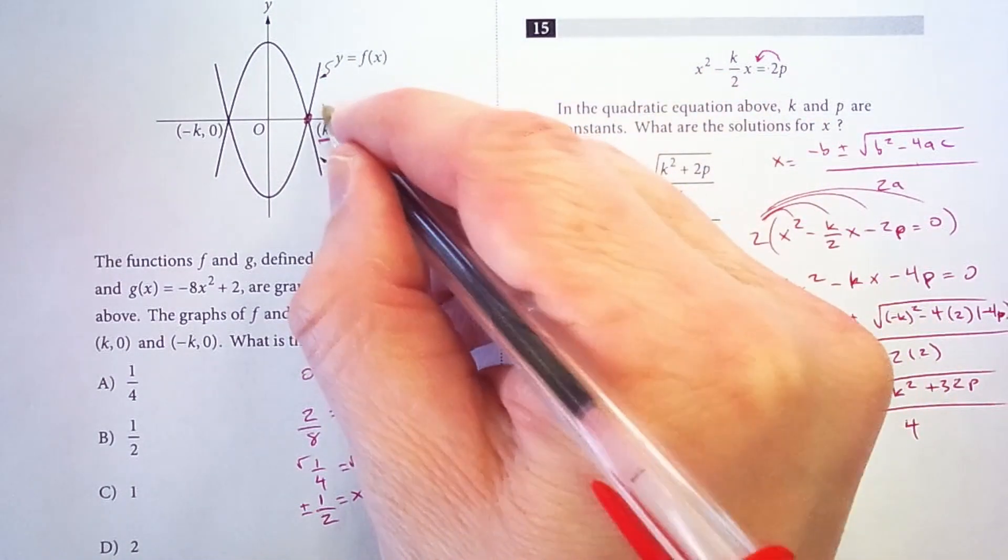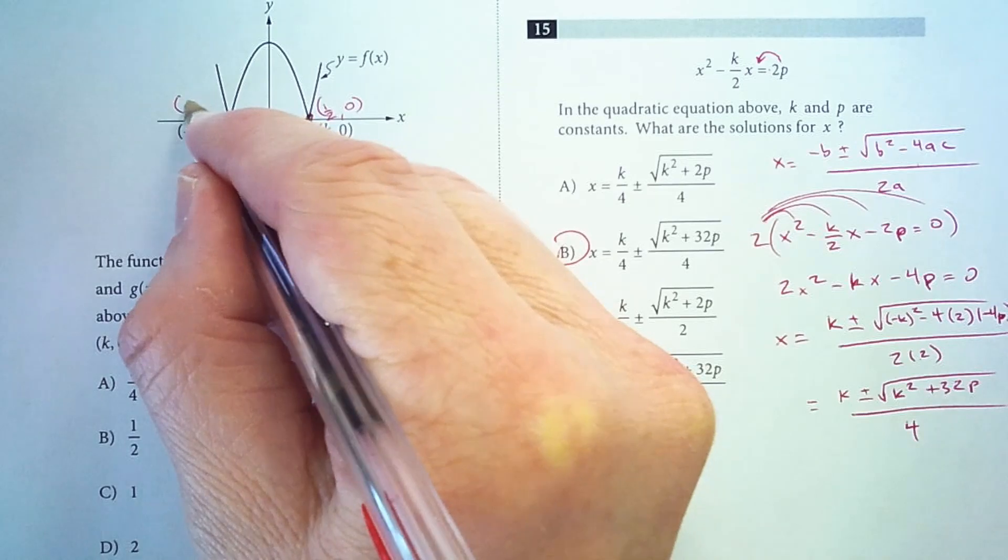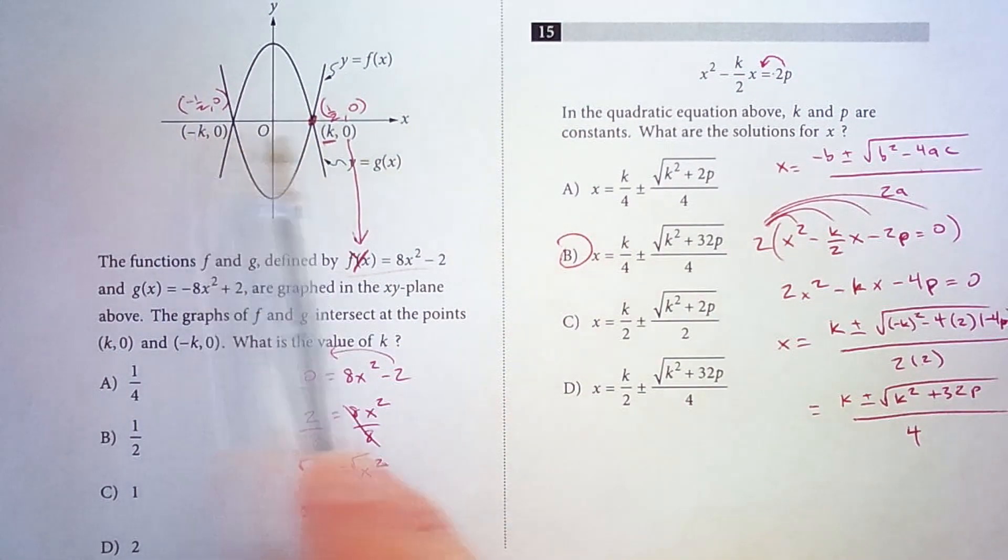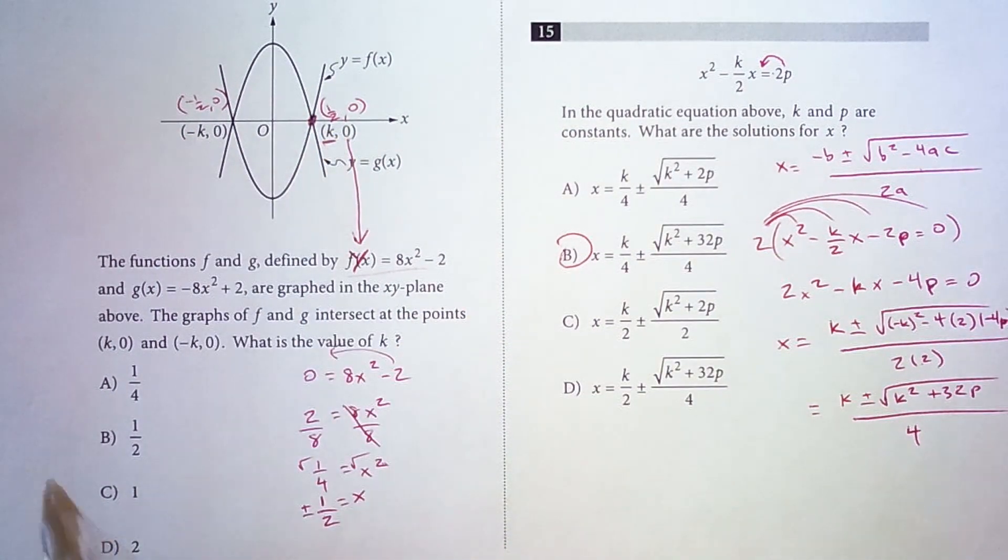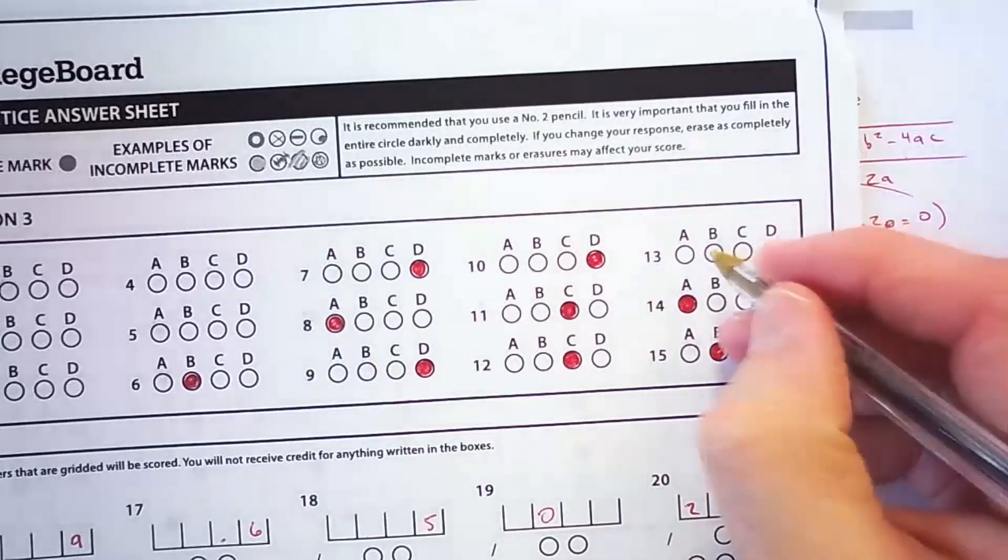That means right here I have (1/2, 0), and over here I have (-1/2, 0). But it is asking for the value of k, not negative k. So positive k, that is 1/2. So for number 13, I am choosing option B.